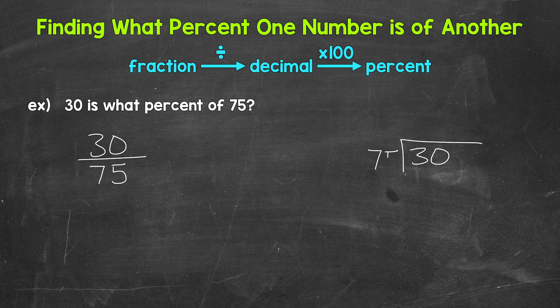So 30 divided by 75. How many whole groups of 75 in 30? How many 75s in 30? Well, we can't do that. So we need a decimal and a zero in order to work through this. Once we have the decimal and the zero, we bring the decimal straight up into where the quotient, the answer will be.